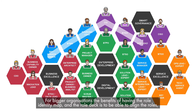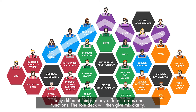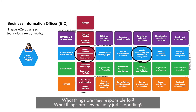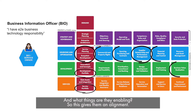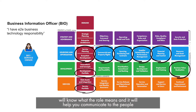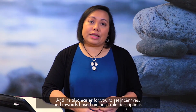For bigger organisations, the benefit of having the role identity map and the role deck is to be able to align and standardize roles. You might have roles in your organisation still responsible for many different areas and functions. The role deck gives clarity on what things they are responsible for, what they are supporting, and what they are enabling. For standardization, everyone in the company end-to-end will know what each role means, understand their responsibilities, and it also makes it easier to set incentives and rewards based on those role descriptions.